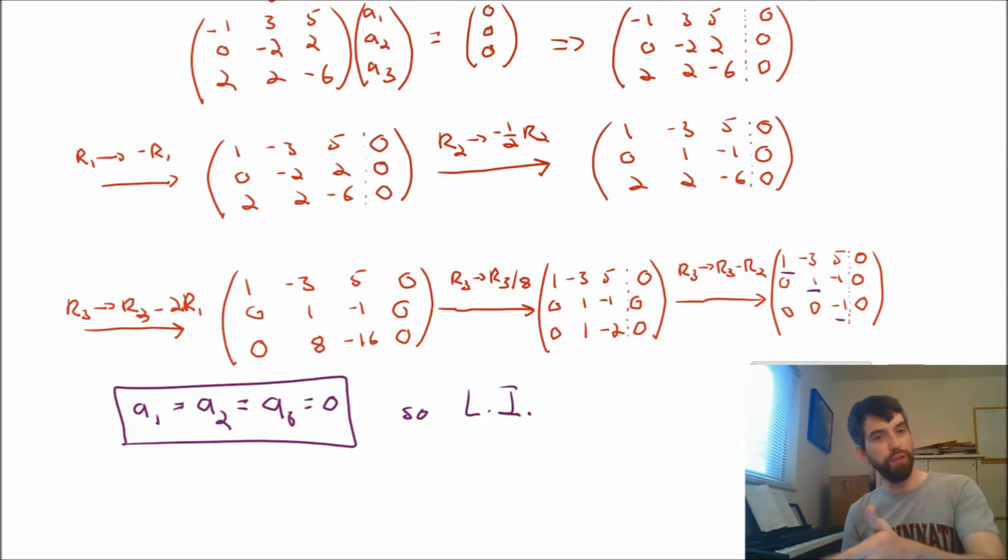However, if we had chosen a different example where I didn't have a leading one going down in every single column, then it could have been that we had a free column. We would have put in a parameter and we'd have infinitely many different non-zero solutions. We'd have the zero solution as well, for sure, but we'd also have infinitely many different non-zero solutions, and therefore we would have gotten it being linearly dependent. But we don't have a free column in this situation. We only have the unique solution. And if it's homogeneous and it's unique, the only possibility is zero, because the zero solution is always a solution to a homogeneous system.